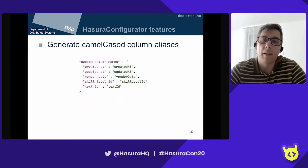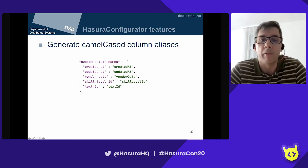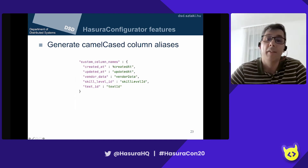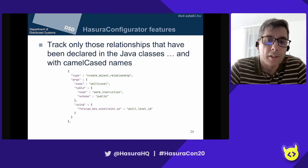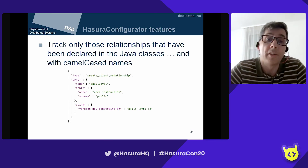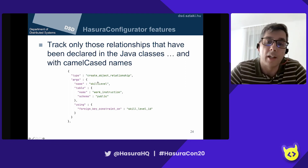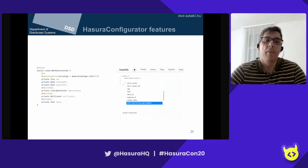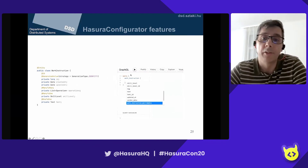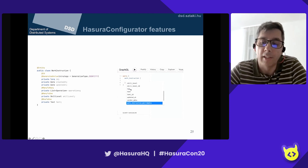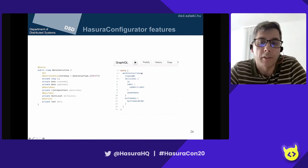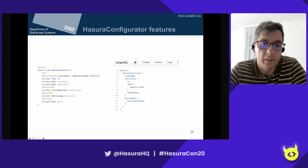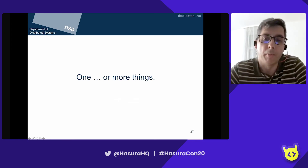The tool also automatically camelCase-aliases the underscored names, and it only tracks those relationships that have been declared in my Java classes and nothing else. The relationship names are now camelCase too. Before applying the Hasura Configurator JSON to the metadata API, I had to deal with underscored symbols. After applying it, I have 'workInstructions', 'createdAt', 'skillLevel' — a much better developer experience.